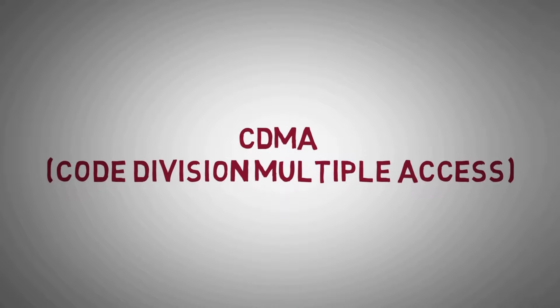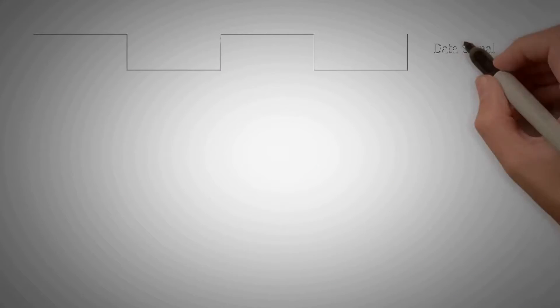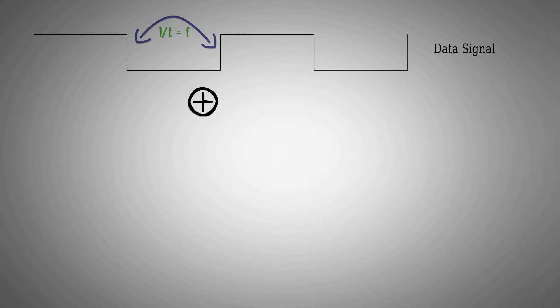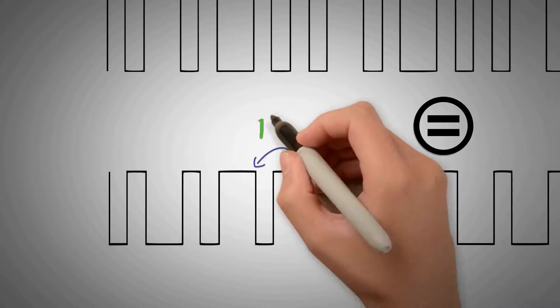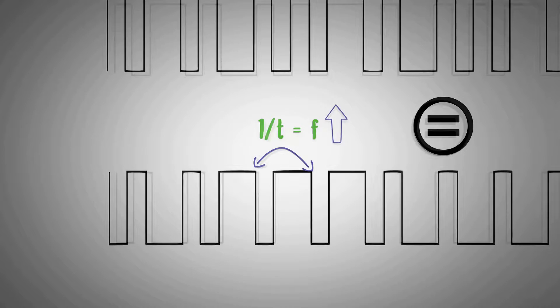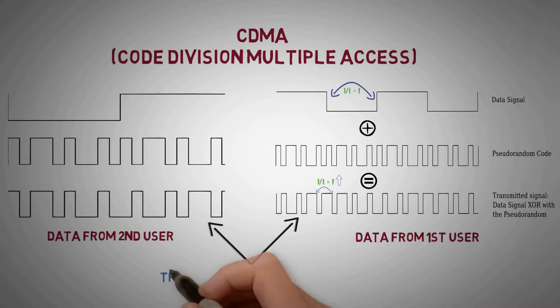CDMA based on code division multiplexing is a technique in which the data bits are modulated by a high frequency orthogonal sequence of bits such as Walsh codes or pseudo-random codes such as gold codes to spread the signals over a large frequency band. Multiple such signals from different users are then transmitted over the same frequency band.